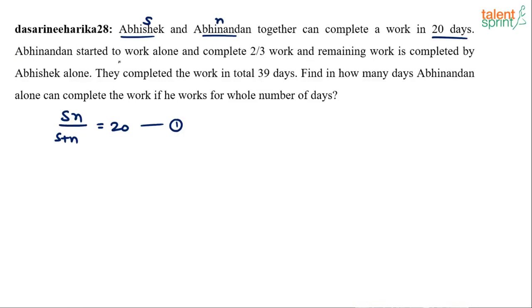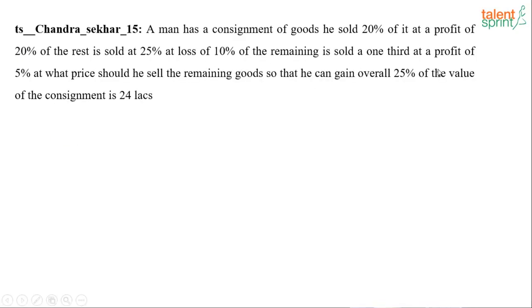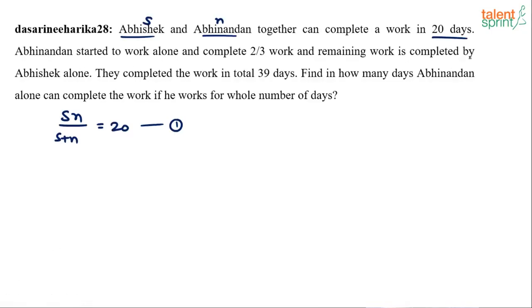What's the other equation? Abhinandan started to work alone and completed two thirds of the work and the remaining work is completed by Abhishek alone. So it's obvious that if Abhinandan has done two thirds of the work the remaining work is one third which was done by Abhishek alone and they completed this in 39 days.